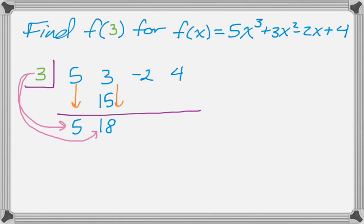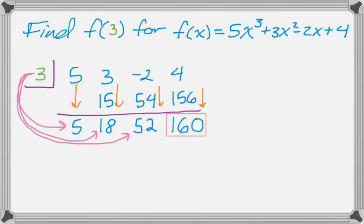I multiply 3 and 18 and that's going to give me 54. I'm going to add down to get 52. Then I'll multiply 3 and 52 and I get 156, so I'm going to add down to get 160. I'm going to put that in a box. That's actually f(3). So doing all that work, I found that f(3) is 160.